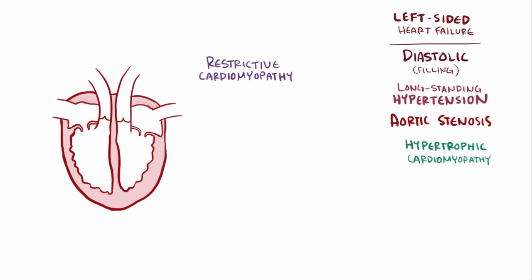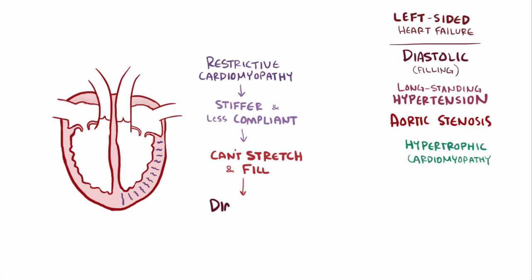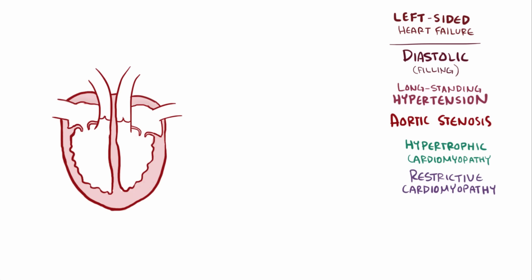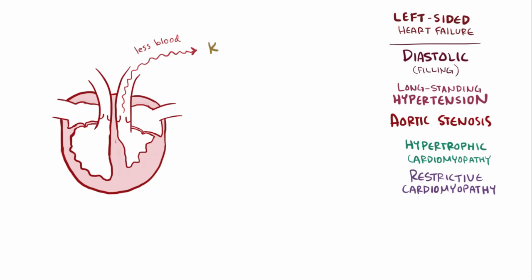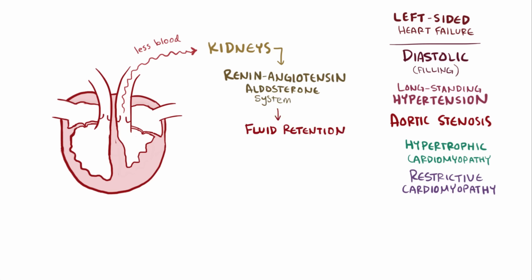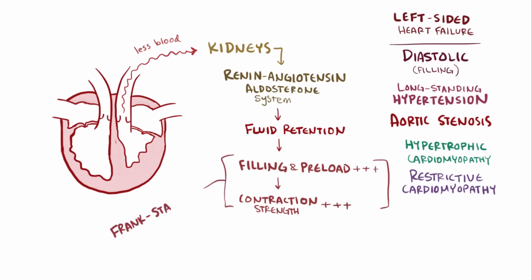Restrictive cardiomyopathies are yet another cause of diastolic heart failure. In this case, the heart muscle gets stiffer and less compliant, so the left ventricle can't easily stretch out and fill with as much blood. When the heart doesn't pump out as much blood, there's decreased blood flow to the kidneys, which activates the renin-angiotensin-aldosterone system, ultimately causing fluid retention, which fills the heart more during diastole, increases preload, and increases contraction strength via the Frank-Starling mechanism.